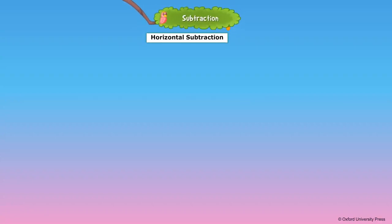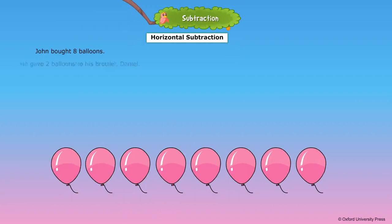Horizontal Subtraction. John bought 8 balloons. He gave 2 balloons to his brother, Daniel.